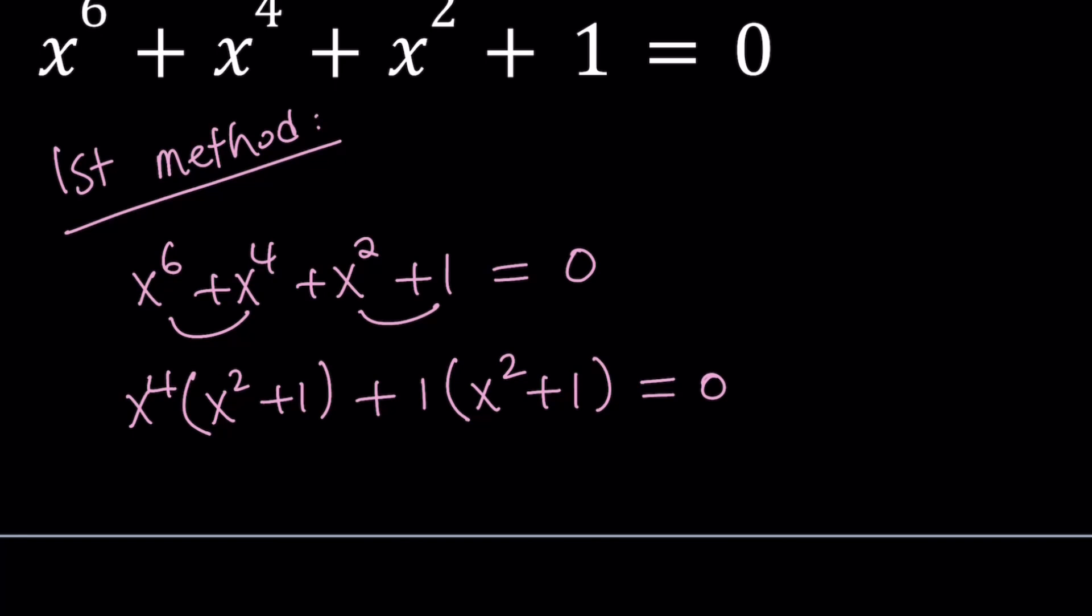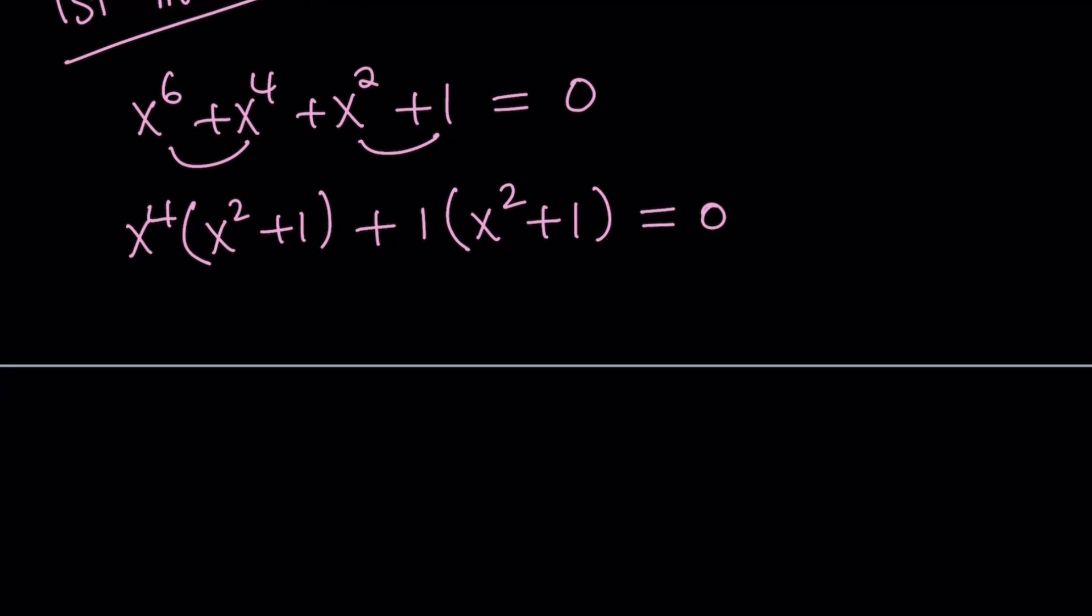And that just generates another common factor which is x^2 plus 1. So if we take that out, we end up with (x^2 + 1)(x^4 + 1) = 0.